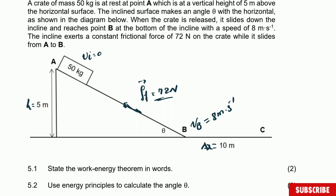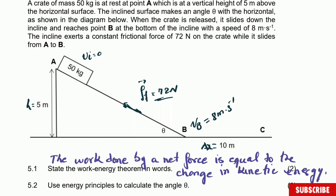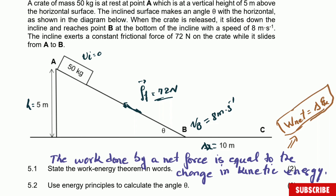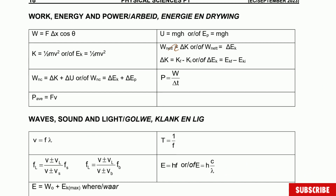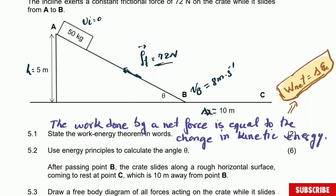Question 5.1 says: state the work-energy theorem in words. That theorem is quite simple — it's one of the easiest theorems or definitions you'll have in the exam. All you have to say is that the work done by a net force is equal to the change in kinetic energy. This can be written as: net work equals change in kinetic energy. This theorem is given to you in the formula sheet. So question 5.1 is already answered — you get two marks for that.